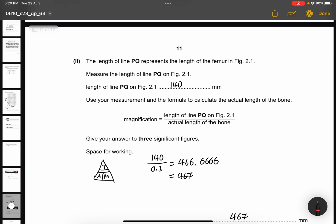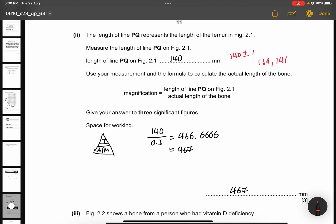Part 2. The length of line P and Q represents the length of the femur in figure 2.1. Measure the length of the line P and Q on figure 2.1. So, the length of the line on figure 2.1 is about 140 mm. Or, you can put 141 plus minus 1. But maybe it could be 139 or it could be 141 mm. Both are acceptable. Use your measurement and the formula to calculate the actual length of the bone. Give your answer to 3 significant figures. So, just use I divided by M, which is 140 divided by 0.3. You'll get 466.66666. So, in 3 significant figures, it would be 467 mm.